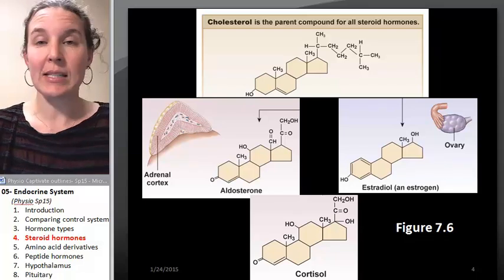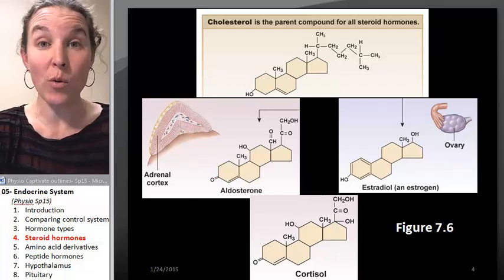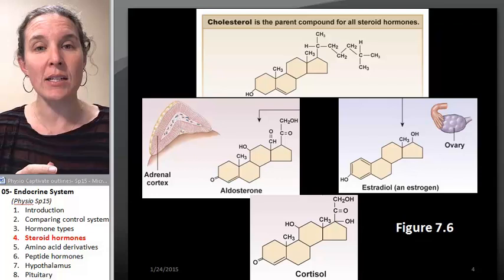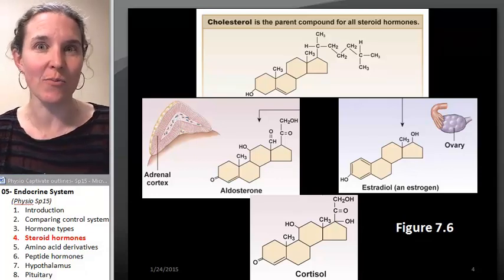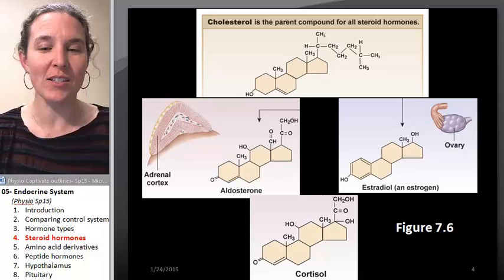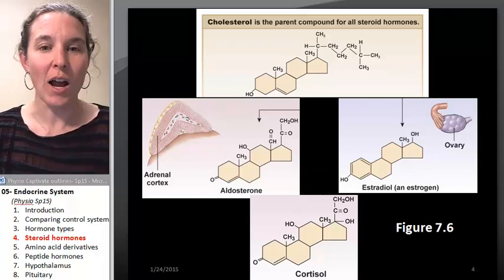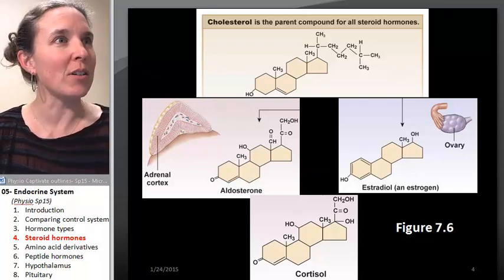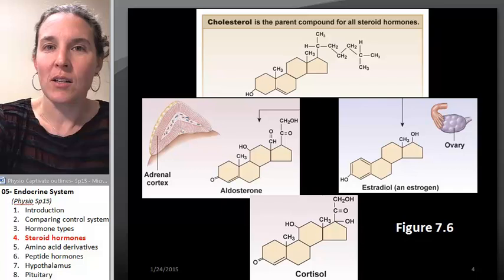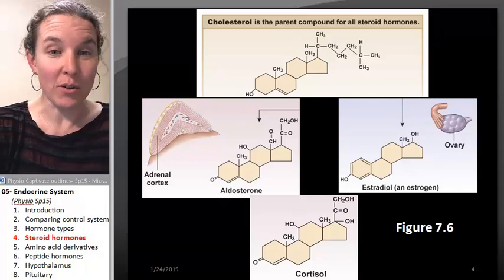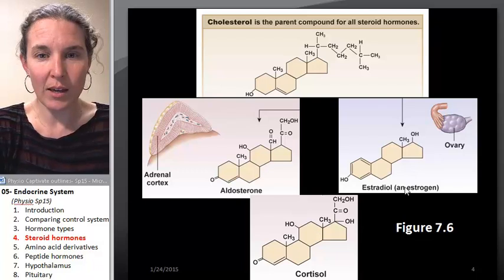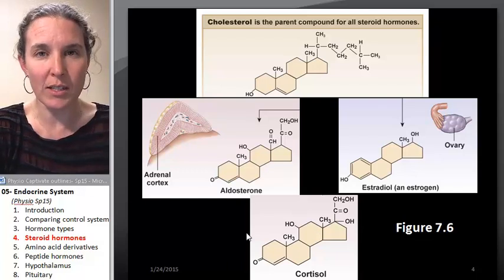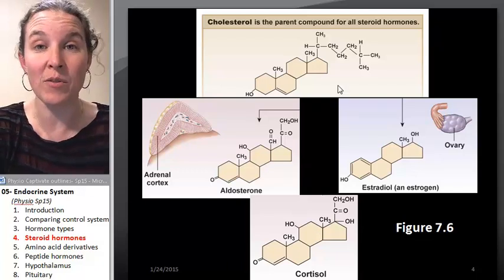The first kind of hormone we're going to look at is a steroid hormone. Steroid hormones usually end in the word sterone, like testosterone, progesterone, aldosterone, or cortisol. Cortisol is also a steroid hormone just because they all kind of look very similar, and that's because they're all made from cholesterol.